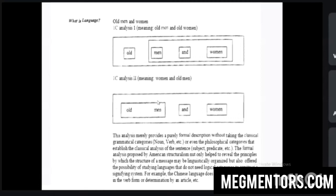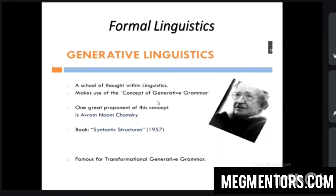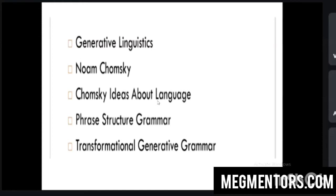Now we move to generative linguistics. The advocate of generative linguistics is Noam Chomsky. It is he who came up with the concept of generative grammar. His important book is Syntactic Structures. He is famous for TG grammar — Transformational Generative Grammar. His ideas are associated with generative linguistics, universal grammar, phrase structure grammar (PSG), and TG grammar. He came up with TG grammar to replace phrase structure grammar.